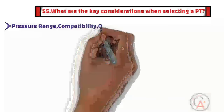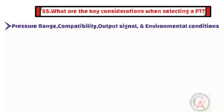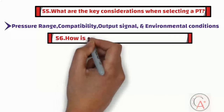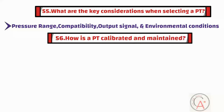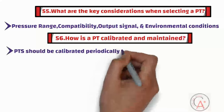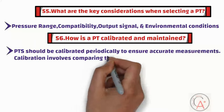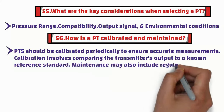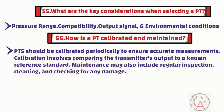Question fifty-six is: how is a pressure transmitter calibrated and maintained? Pressure transmitters should be calibrated periodically to ensure accurate measurements. Calibration involves comparing the transmitter's output to a known reference standard. Maintenance may also include regular inspection, cleaning, and checking for any damage. Some transmitters can be adjusted to correct for deviations from the specified accuracy.